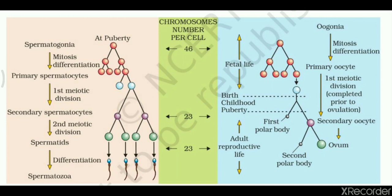The primary spermatocyte undergoes meiosis 1 and gives two haploid secondary spermatocytes. When secondary spermatocytes are formed, the chromosome number becomes haploid because the homologous pairs of chromosomes have already separated.